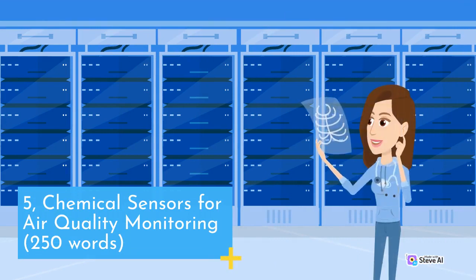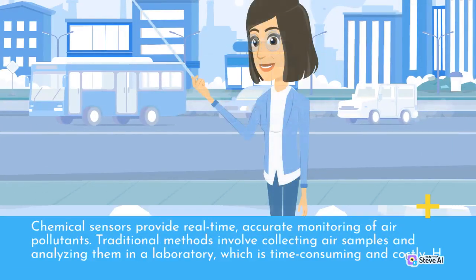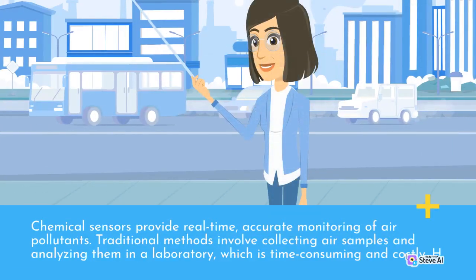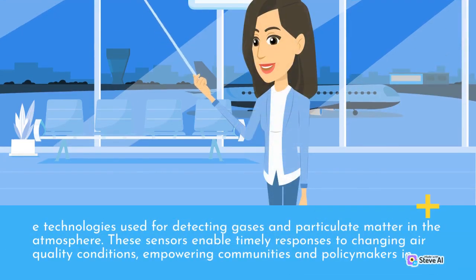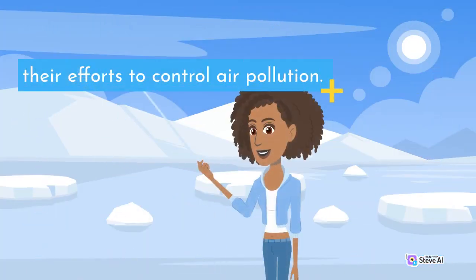Chemical Sensors for Air Quality Monitoring. Chemical sensors provide real-time, accurate monitoring of air pollutants. Traditional methods involve collecting air samples and analyzing them in a laboratory, which is time-consuming and costly. However, advanced sensor technologies allow for continuous monitoring, providing data for immediate action. Chemoresistive sensors, electrochemical sensors, and optical sensors are among the innovative technologies used for detecting gases and particulate matter in the atmosphere. These sensors enable timely responses to changing air quality conditions, empowering communities and policymakers in their efforts to control air pollution.